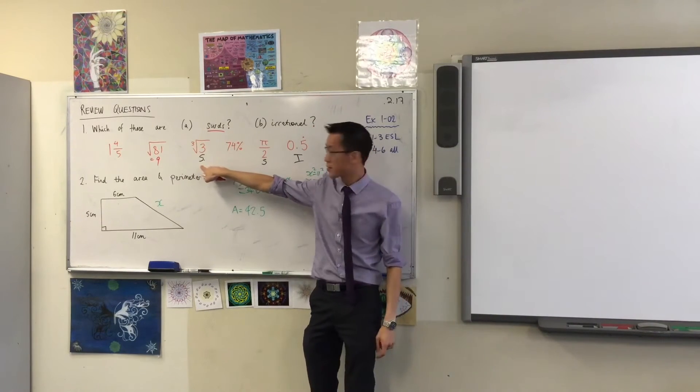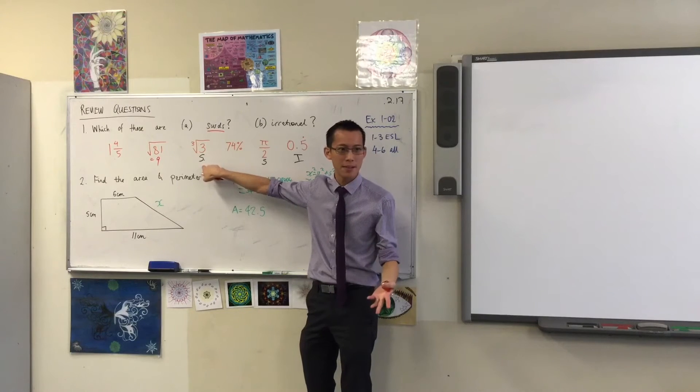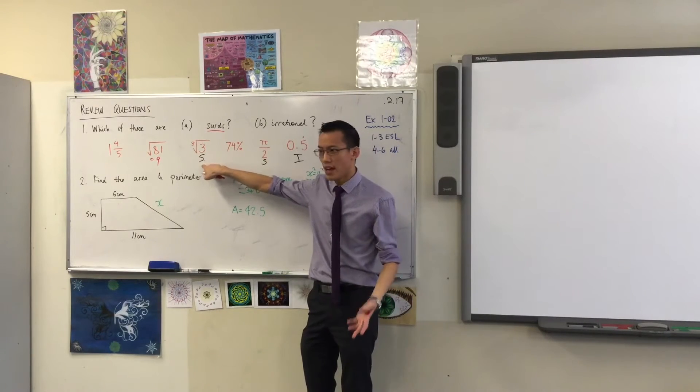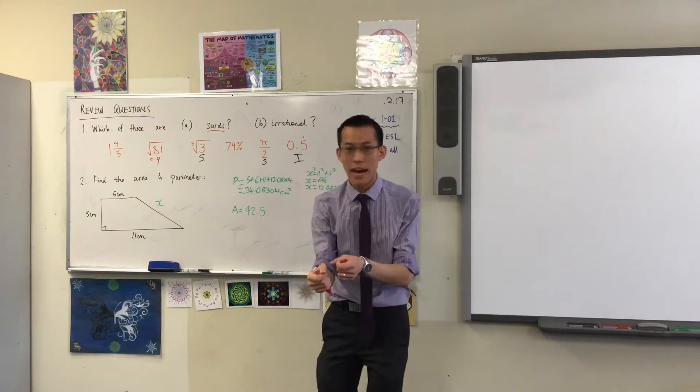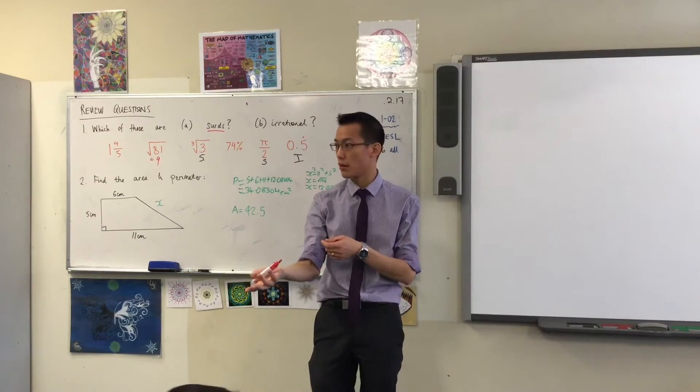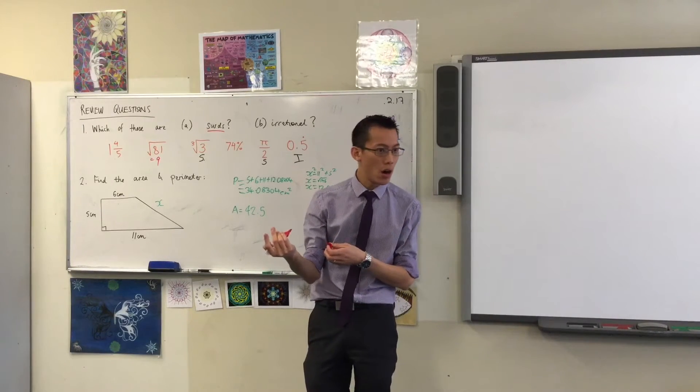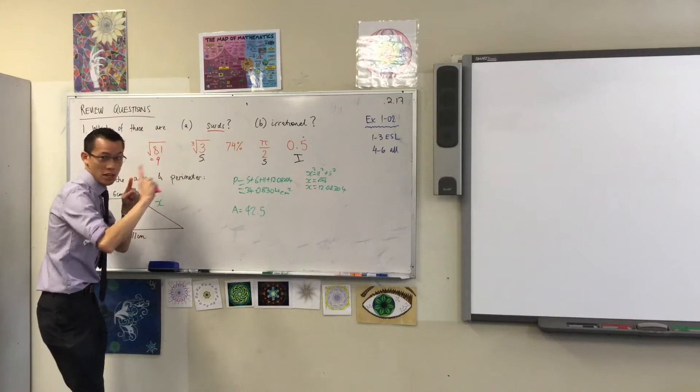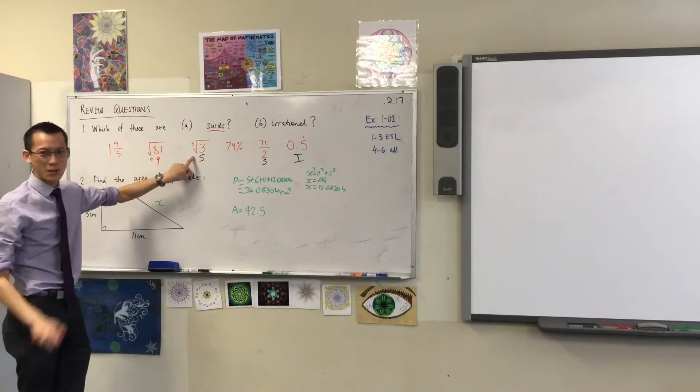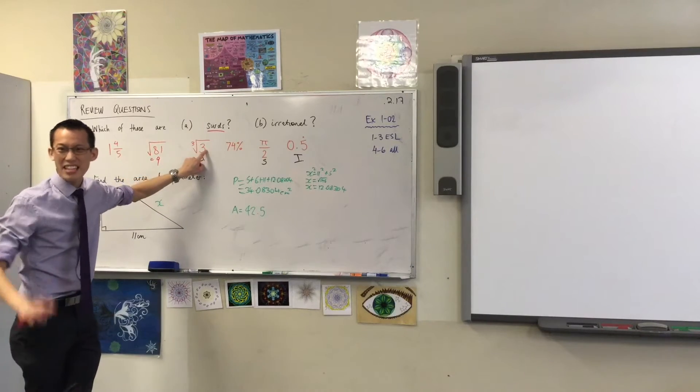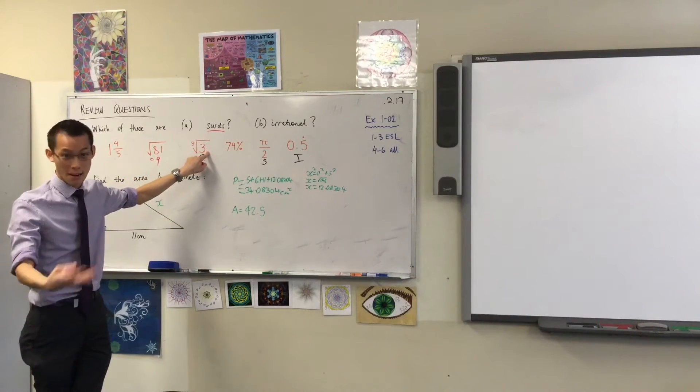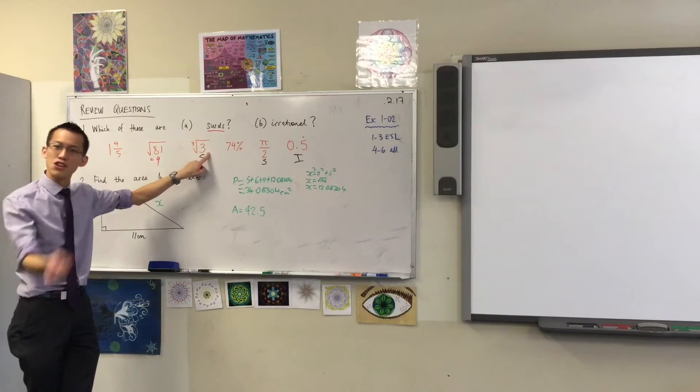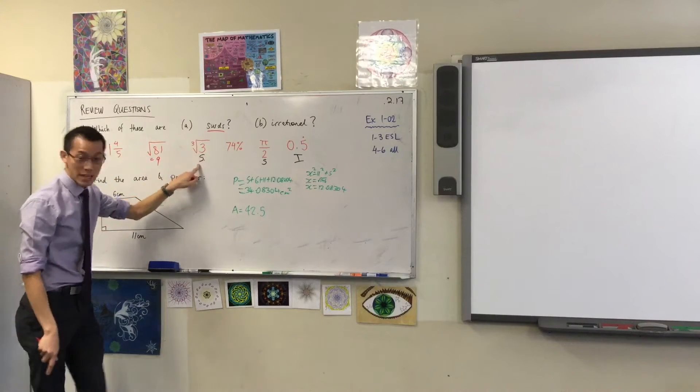This number, by contrast, is a surd. Why is that? Because it's a better one. Yeah, because if you go to your calculator, what is the cube root of 3? It's 1.44224. Yeah, fantastic. And you can see the decimal places just keep on going, right? So that's always going to be some weird thing, because 3 is not a nice cubic number. There's no whole number you can cube to get that. So it's a surd.